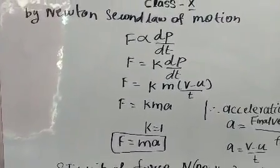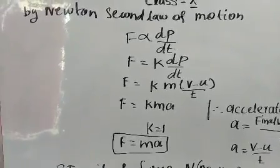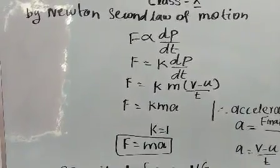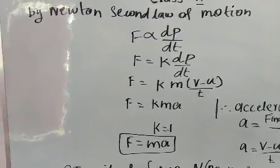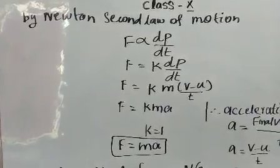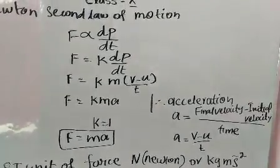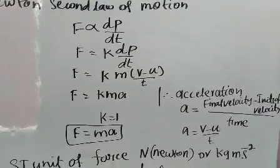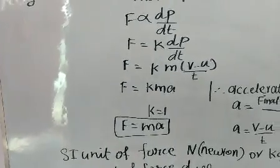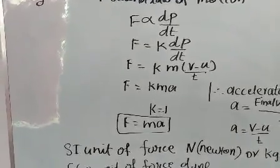By Newton's Second Law of Motion, force is directly proportional to dP/dt, or force is directly proportional to the rate of change of momentum. So F = K·(dP/dt), where K is the proportionality constant. Substituting dP/dt = M(V − U)/T, we get F = K·M·(V − U)/T. Since acceleration A = (V − U)/T, this gives F = K·M·A. Since K = 1, finally F = MA. This is the mathematical derivation of Newton's Second Law of Motion.